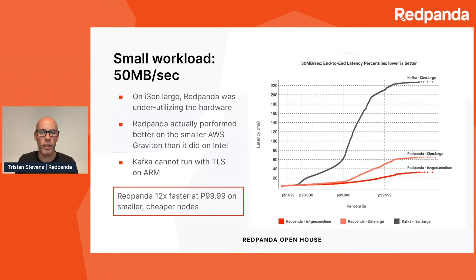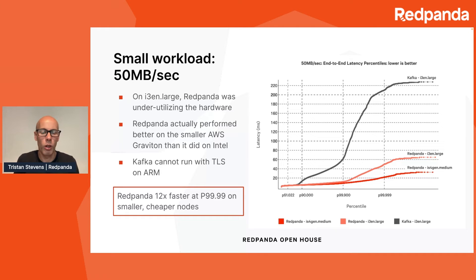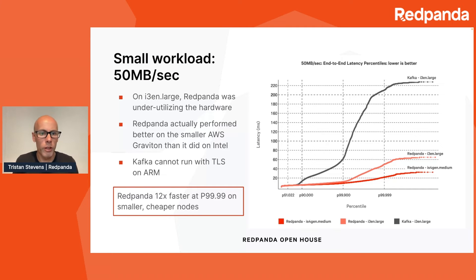Compare the red lines for Redpanda with the black line for Kafka. Kafka can't run with TLS on the ARM instances — the way Kafka handles TLS falls foul of problems in the Java virtual machine that mean you don't get hardware optimization on ARM, so we actually couldn't complete this workload on ARM for Kafka. Kafka on Intel starts to degrade around p99, while Redpanda maintains a particularly consistent latency profile well above p99.99. Redpanda on this workload is 12 times faster at p99.99, even on smaller, cheaper nodes.